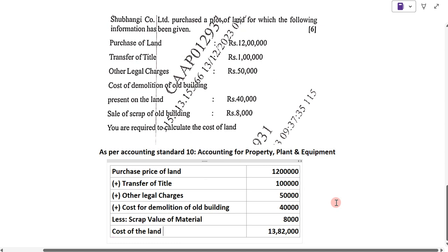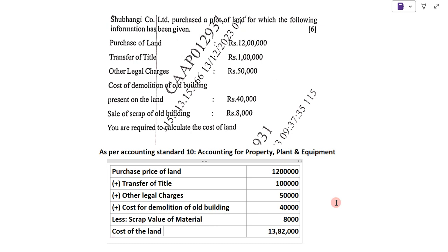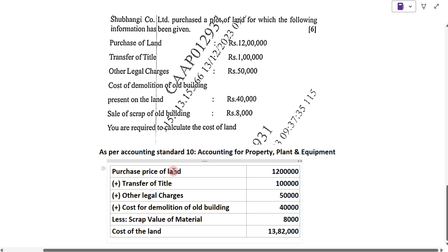This is a very simple example. You can easily solve it — you just have to remember the steps. Add the price of the land, transfer of title, other legal charges, and cost of demolition of old building, then less the scrap value. Finally, you will get the cost of the land.